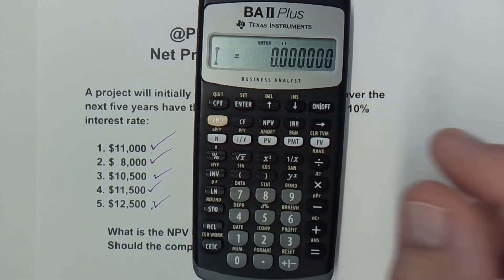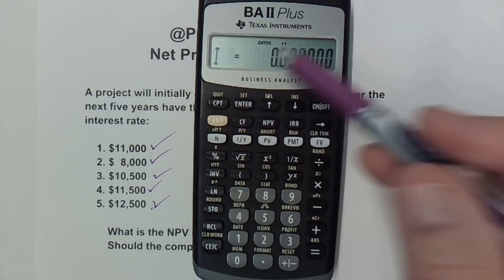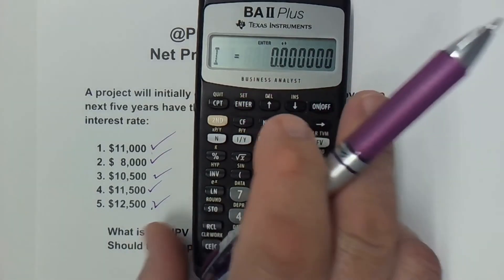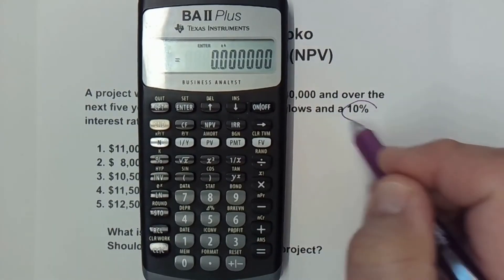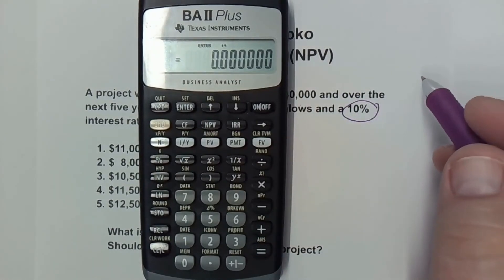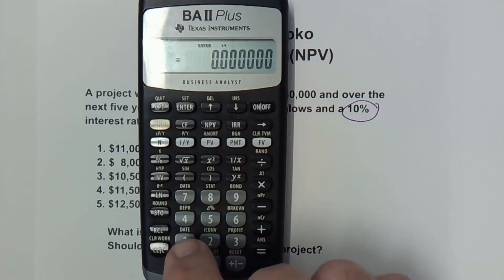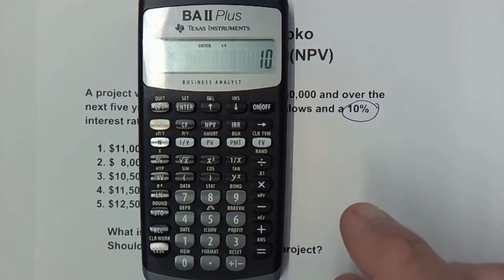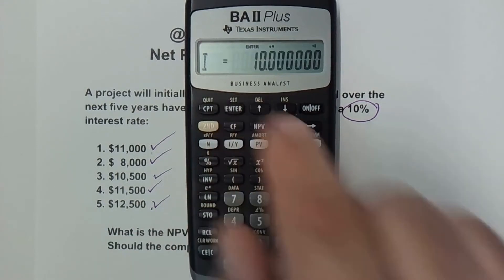And the first thing it asks me after hitting NPV is I, that's asking me for the interest rate. The interest rate as we can see is 10%. I don't want to enter it as a decimal. I enter it as a percentage. So I just put in 10, just like that. And just like everything else, we hit enter.